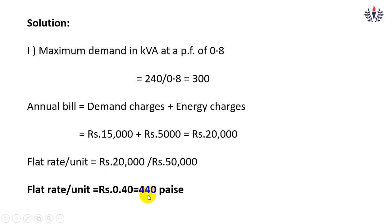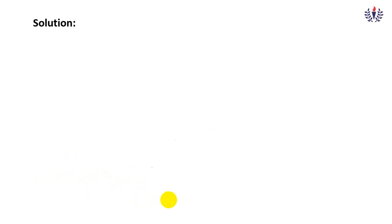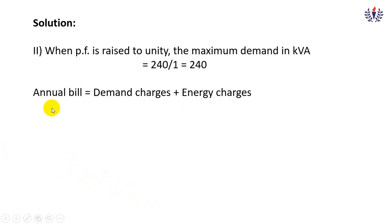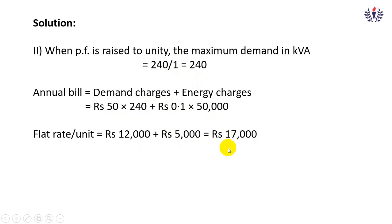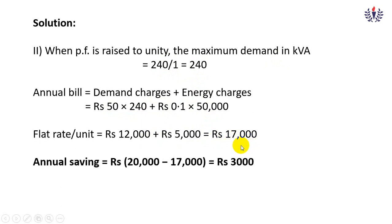If the power factor is raised to unity, maximum demand in kVA = 240 ÷ 1 = 240 kVA. New annual bill = (rupees 50 × 240) + (rupees 0.10 × 50,000) = rupees 12,000 + rupees 5,000 = rupees 17,000. Annual saving = rupees 20,000 − rupees 17,000 = rupees 3,000. This is the saving achieved by improving power factor from 0.8 to unity.